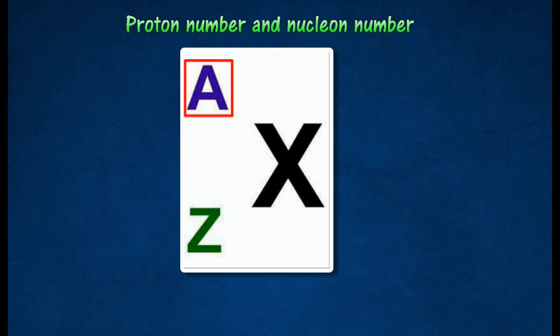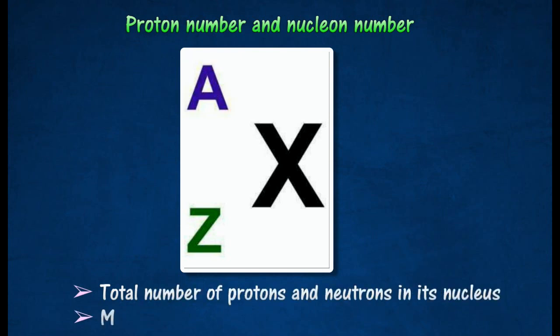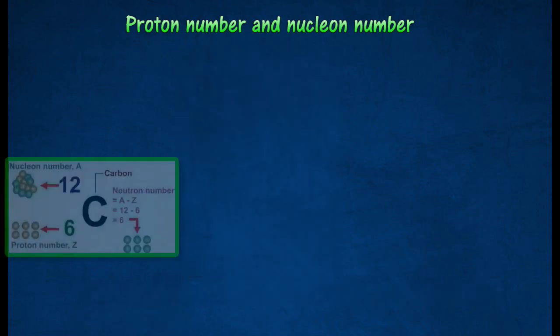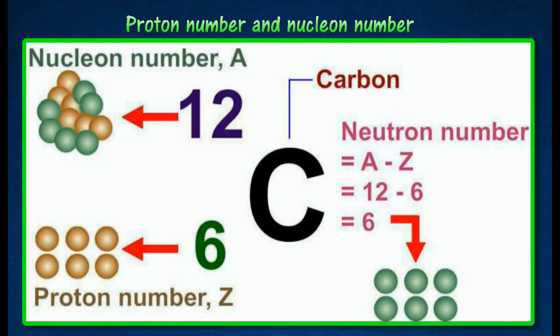The nucleon number of an atom is defined as the total number of protons and neutrons in its nucleus. It is also known as mass number. The difference between the nucleon number and the proton number gives the number of neutrons in the nucleus.